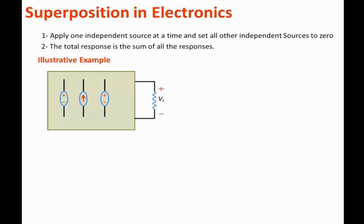To use the superposition concept, we apply one independent source at a time and set the other sources to zero. When you set a voltage source to zero, it becomes a short circuit, because a short circuit has zero volts. If you have a current source and set it to zero, you make it an open circuit, since an open circuit has zero amps.